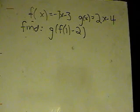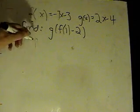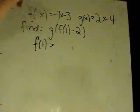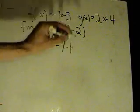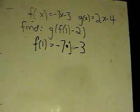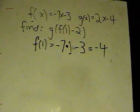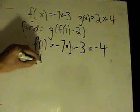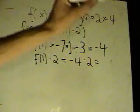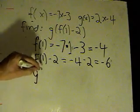One good way to do that is always write down statements that are true. Start simple — let's figure out f of 1. So my first step is find f of 1. I'll write down what's true: minus 7 times 1 minus 3. Sloppy writing is another common mistake. Minus 7 minus 3 gives minus 4. Now the next step: f of 1 minus 2 — that's minus 4 minus 2, which is minus 6. And now I have g, with minus 6 inside, so I can take g of minus 6.